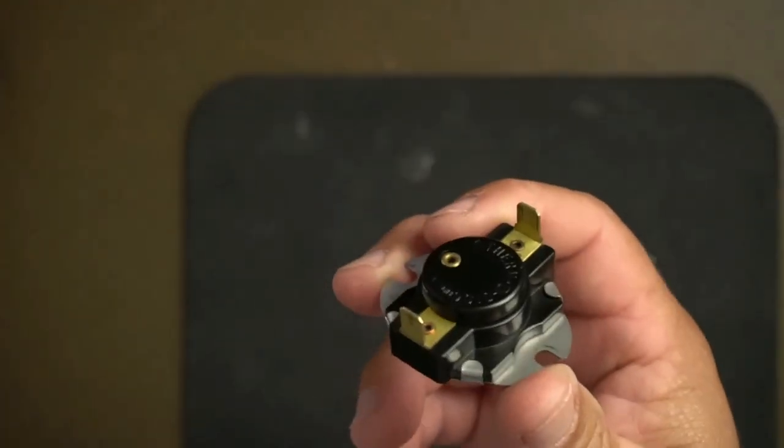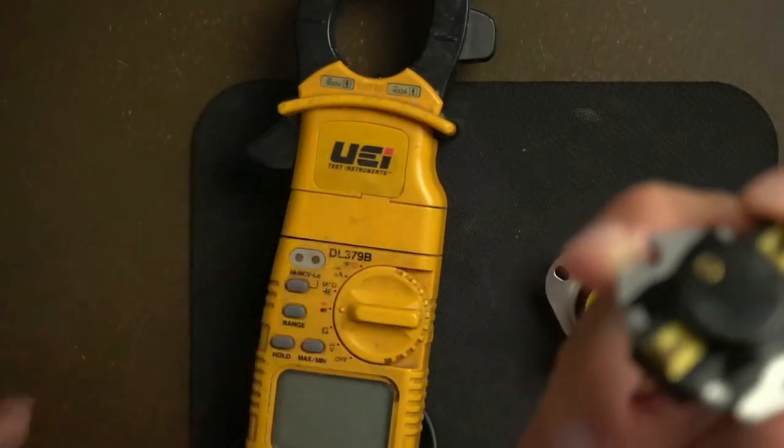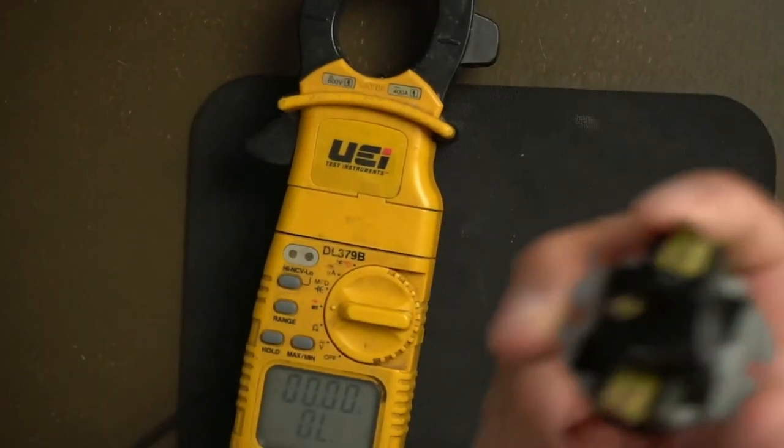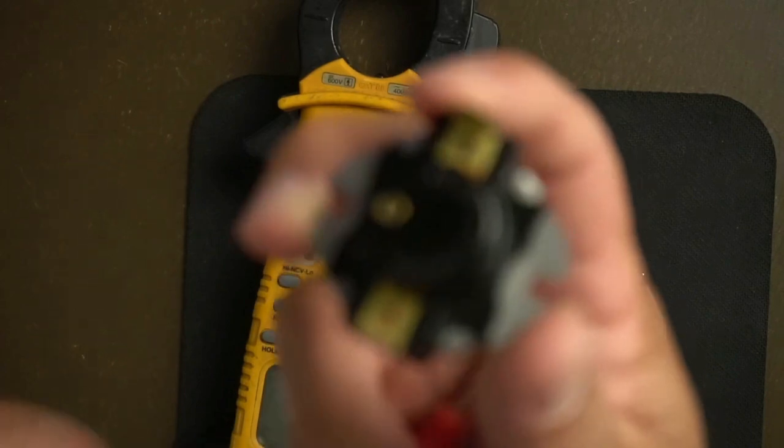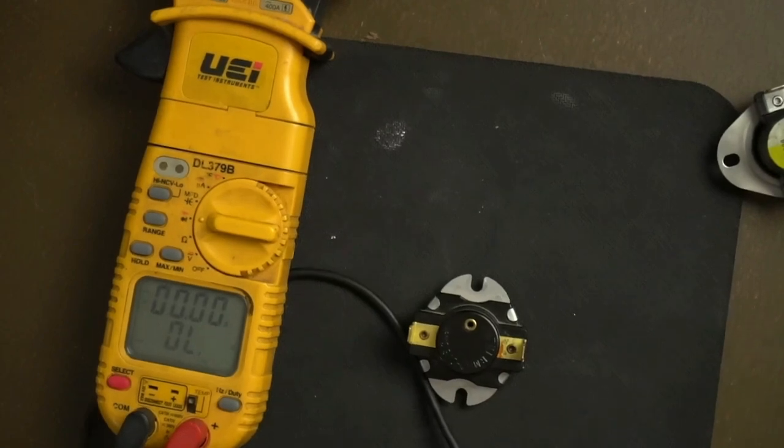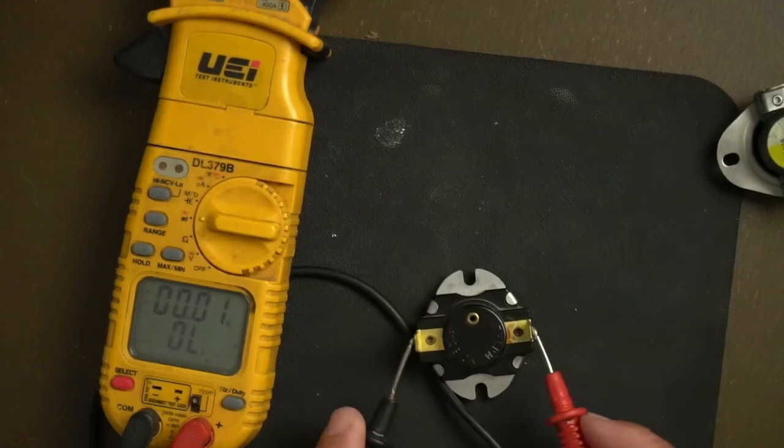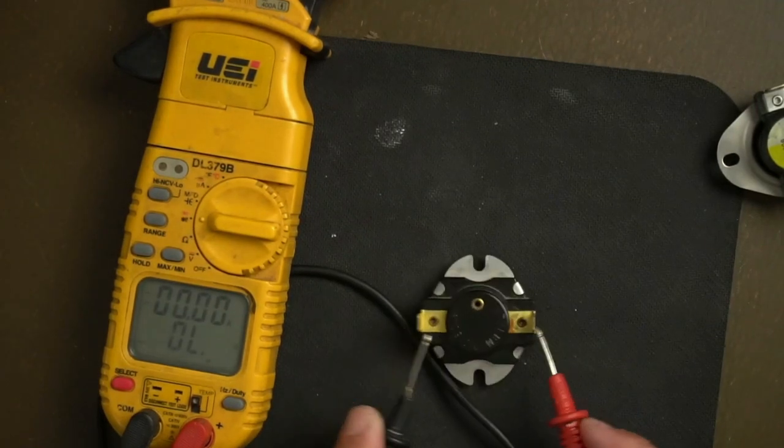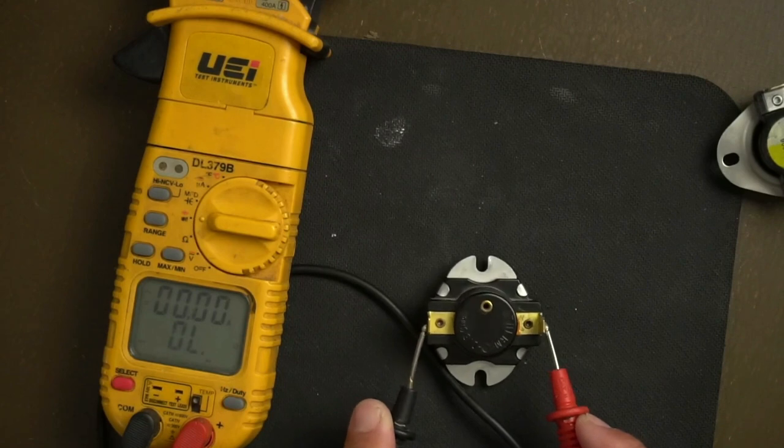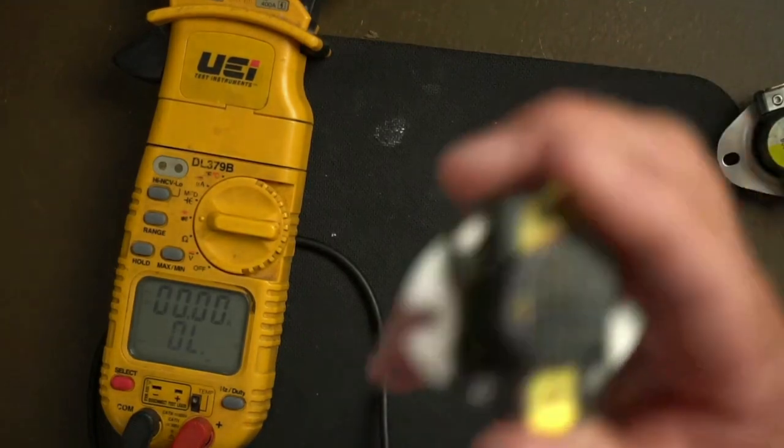The fan switch is always open. When it's not doing anything, it's open. So I'll put a multimeter here and I'll put it on continuity. You'll see that it's open and there's no continuity to it. So this is always going to be open when it's not in service or doing anything. Well the first thing I'm going to say is, how do you know if it's a limit switch or a fan switch?